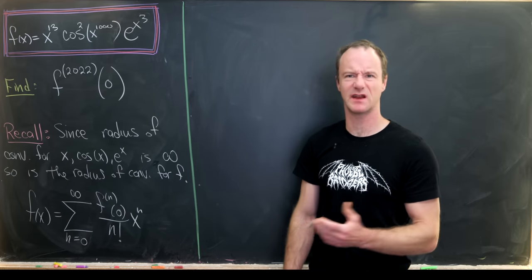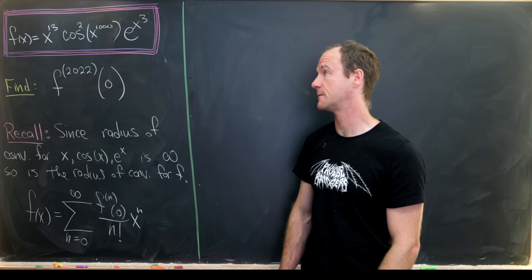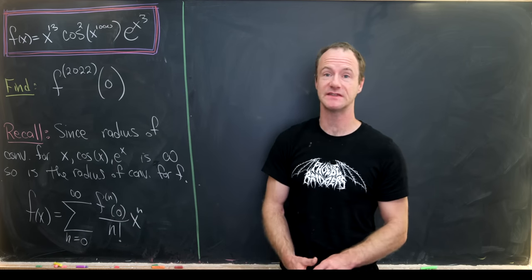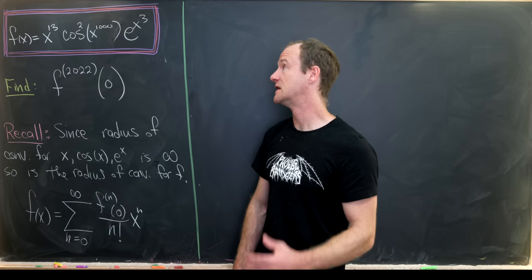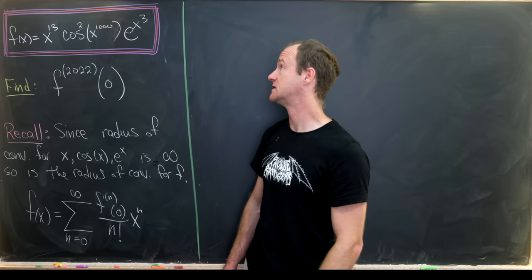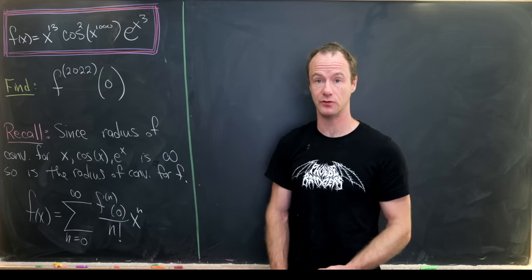Today I've got a pretty crazy looking problem that is actually not too bad when you know the trick. So let's consider the following function: we have f of x equals x to the 13 times cosine squared of x to the 1000 times e to the x cubed.